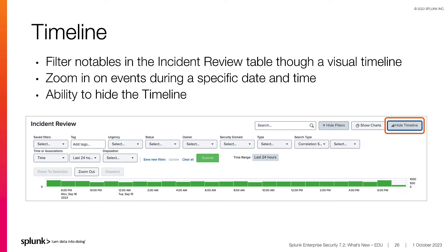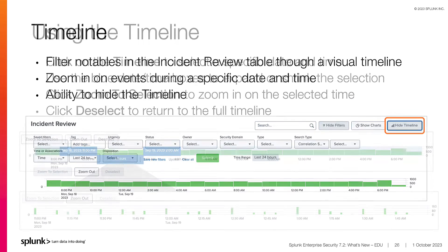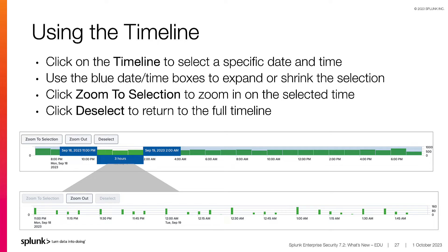Let's take a look at the other enhancements made to the Incident Review dashboard in ES 7.2. First, there is the timeline. Analysts can filter the Incident Review table using a visual timeline, zooming in on anomalous events during a specific time range. You can also remove the timeline from view using the Hide Timeline button at the upper right corner of the dashboard. To use the timeline, select a specific date and time. The blue date and time boxes appear on each side of the selected range. Drag the blue boxes to expand or shrink the selected time range. The timeline then zooms in on the selected time range. Select the Deselect button to return to the default timeline.